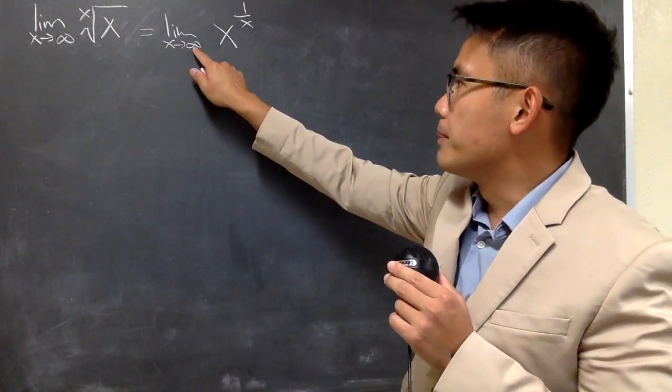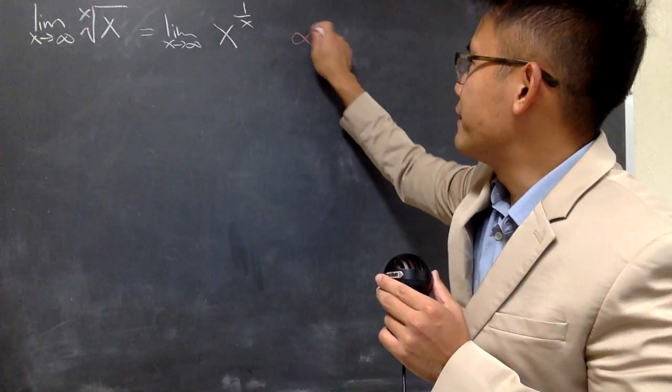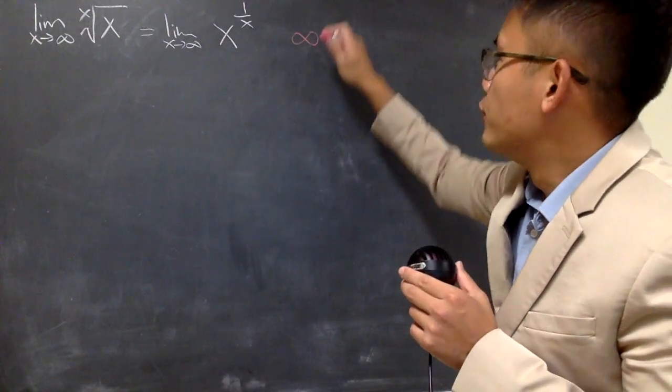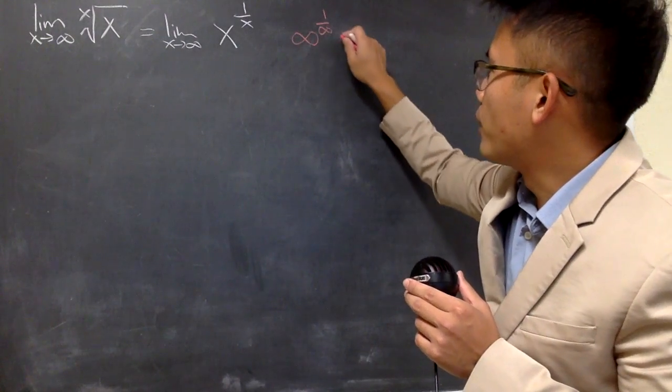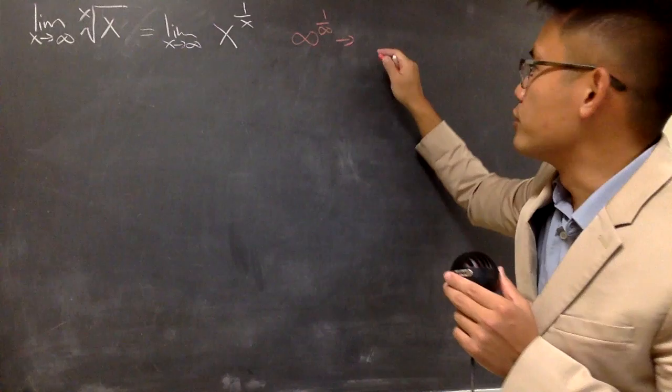And if you were to now, you can plug infinity into this x and x, and we will see that we will have infinity for the base, raised to the 1 over infinity's power. This right here, we can draw conclusion. This right here is approaching 0.